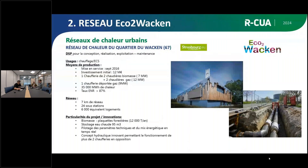Le réseau de chaleur du Wacken est une délégation de service public, délégué par la ville de Strasbourg à la société Éco de Wacken, pilotée par RCA. On a été lauréat du contrat en 2014 et la première mise en service — la chaufferie biomasse — date de 2016, soit environ un an et demi à deux ans de travaux. L'investissement initial était de 12 millions d'euros, aujourd'hui quasiment doublé avec la densification et l'extension du réseau. La solution initiale comportait deux chaudières biomasse : une brûlant de la rafle de maïs, l'autre de la plaquette forestière, plus des chaudières gaz en appoint-secours.